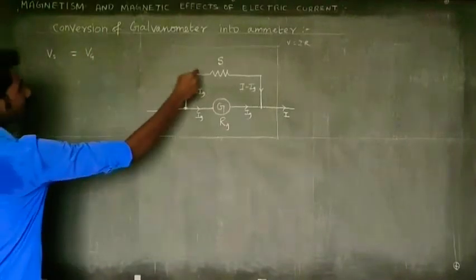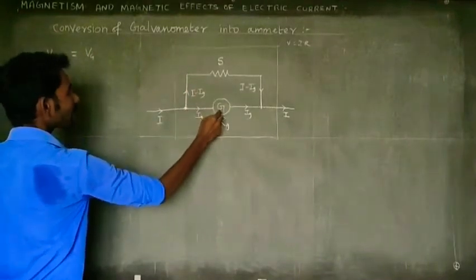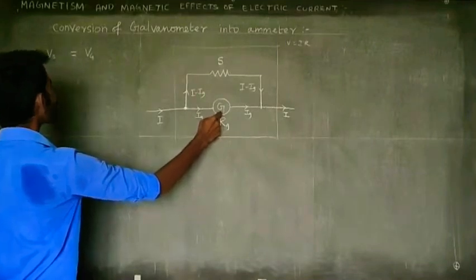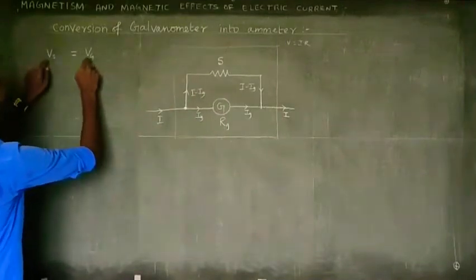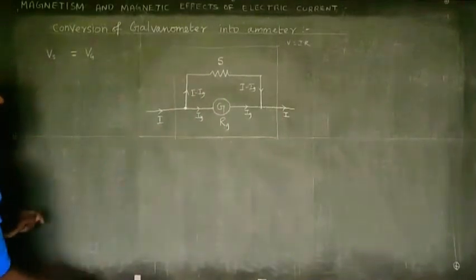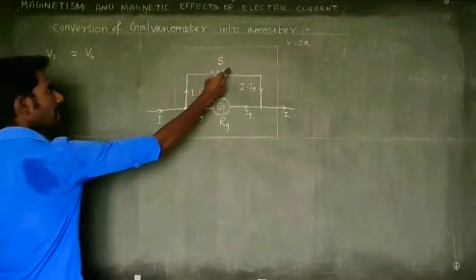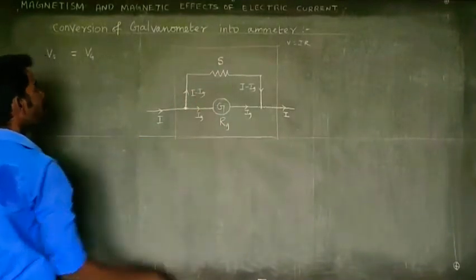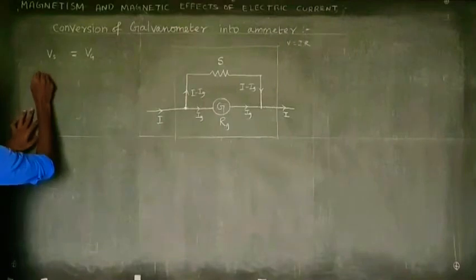The voltage drop across the shunt resistance is equal to the voltage drop across the galvanometer. So we can write: (I minus Ig) times S equals Ig times RG.